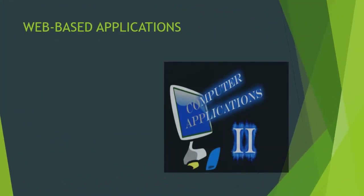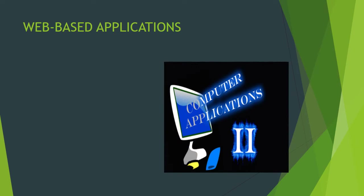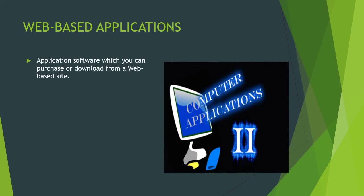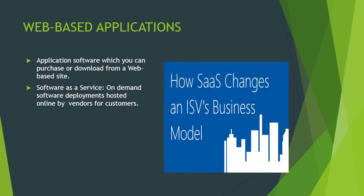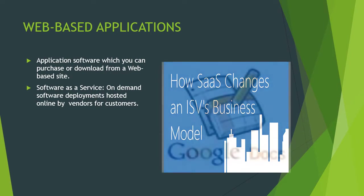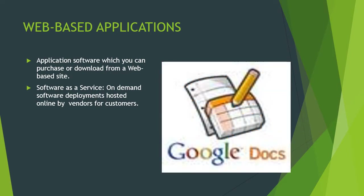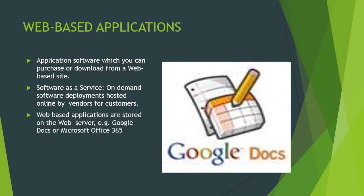Web-based applications — generally, before we had web-based, we used to have to buy programs. But now you can get application software which you can purchase or download from a web-based site, and this makes it more convenient for the consumer. There's something known as software as a service, which is on-demand software deployments hosted online by vendors for the customer. With the SaaS delivery model, the application is made so that the customer can use them over the web.